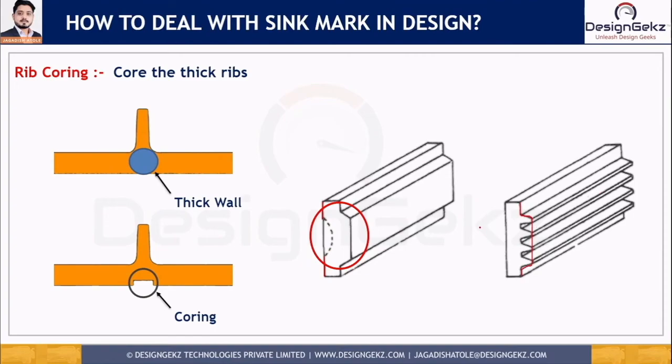Other methods to reduce sink marks include the material displacement method and the heat removal technique. In the material displacement method, we reduce sink marks by adding or removing material — coring out the part in areas where a sink mark is likely to occur — to maintain uniform thickness. In the heat removal technique, we pull heat away from the area where a sink is likely to occur to maintain uniform cooling, using proper mold cooling design to reduce the chance of differential or uneven cooling between thin and thick areas.